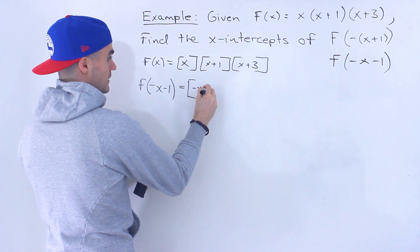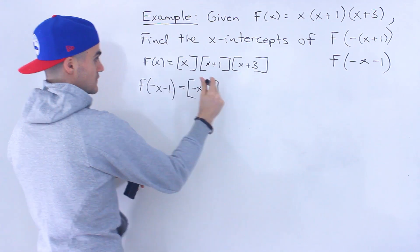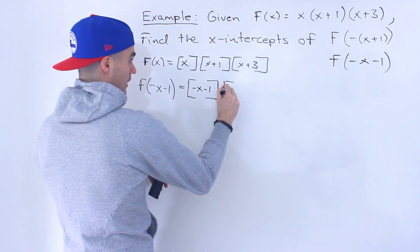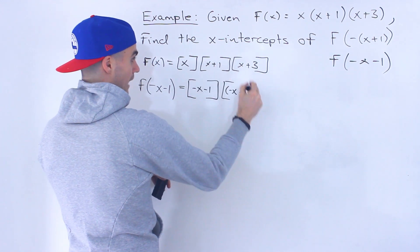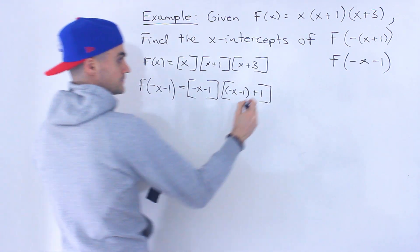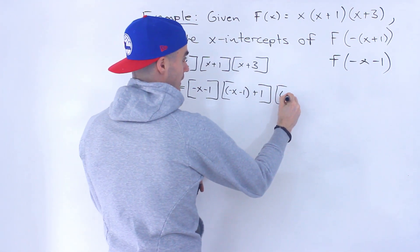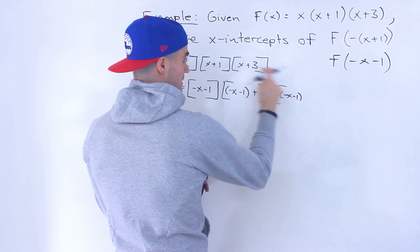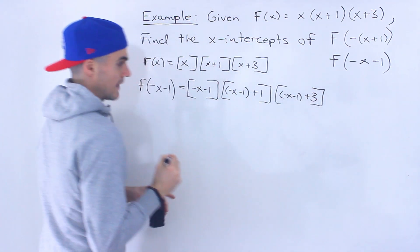So we're going to have negative x minus 1 for this first x value. For the second x value, we plug in negative x minus 1 and then add 1 at the end. And then we plug in negative x minus 1 for the last x, with plus 3 at the end.